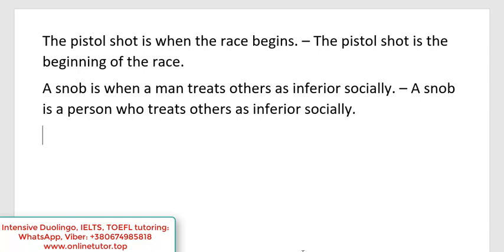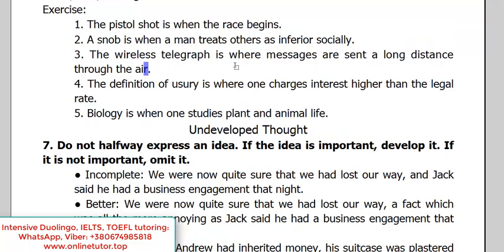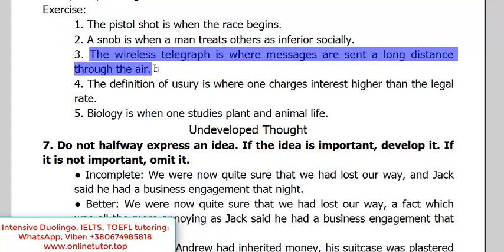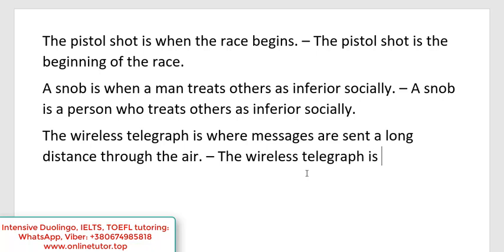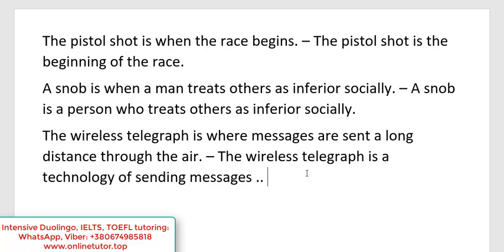'The wireless telegraph is where messages are sent a long distance through the air.' I'm sure you've already guessed the correct version. The wireless telegraph is — we have several options — for example, 'a technology of sending messages a long distance through the air.' Here I have a noun 'telegraph' as subject, and a noun 'technology' as the predicate. That's the pattern.